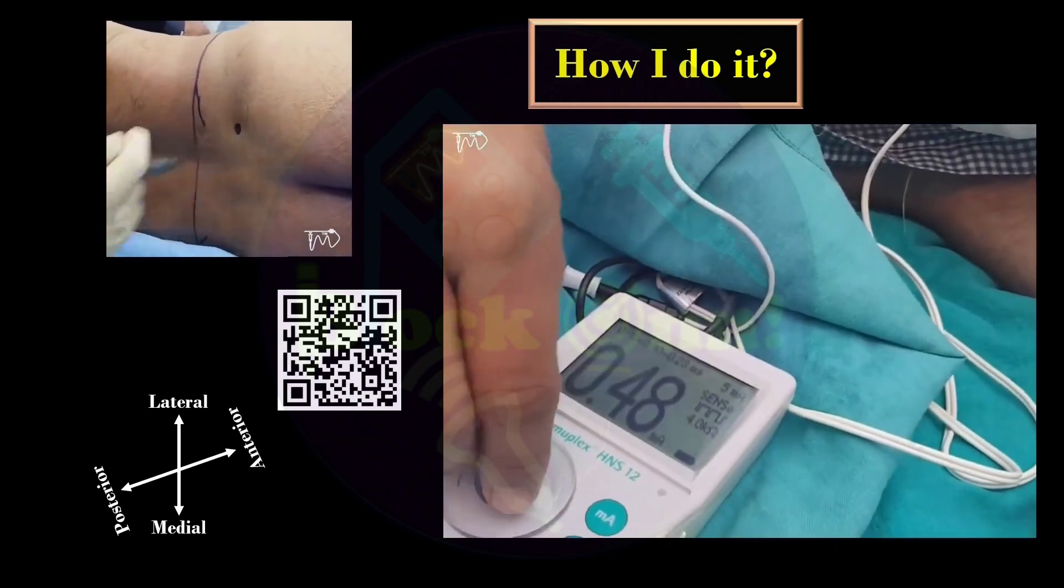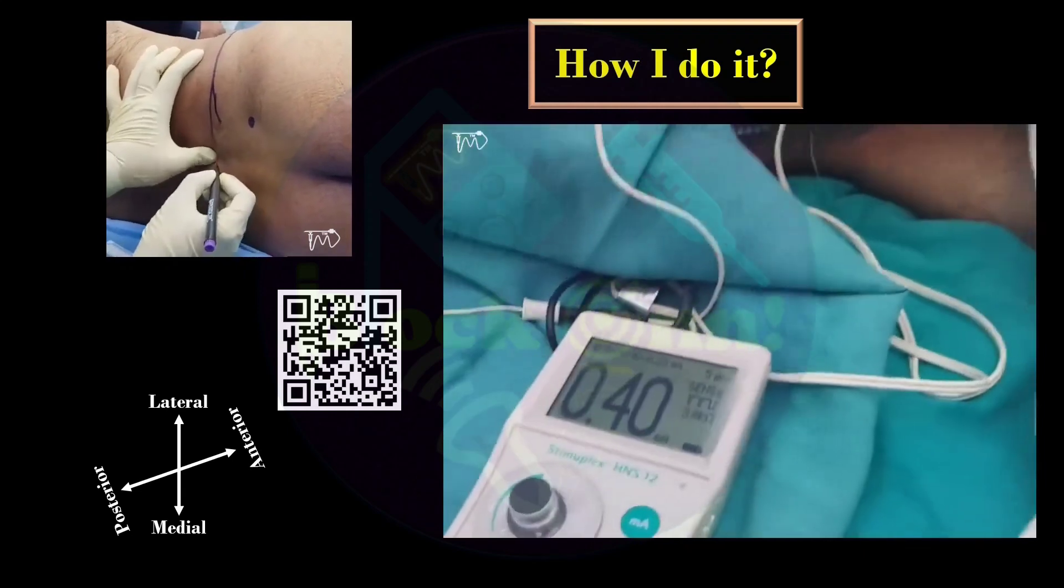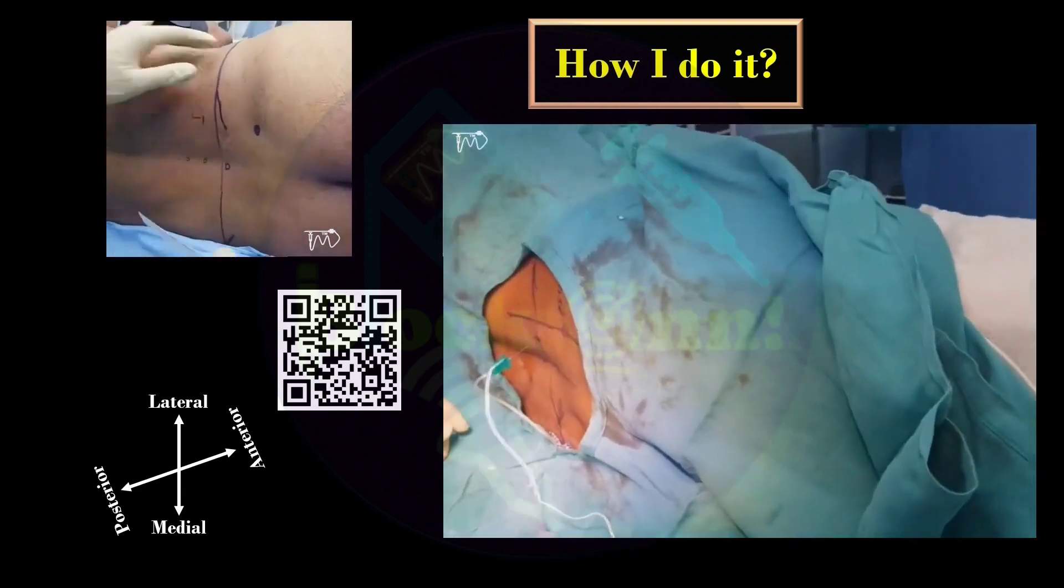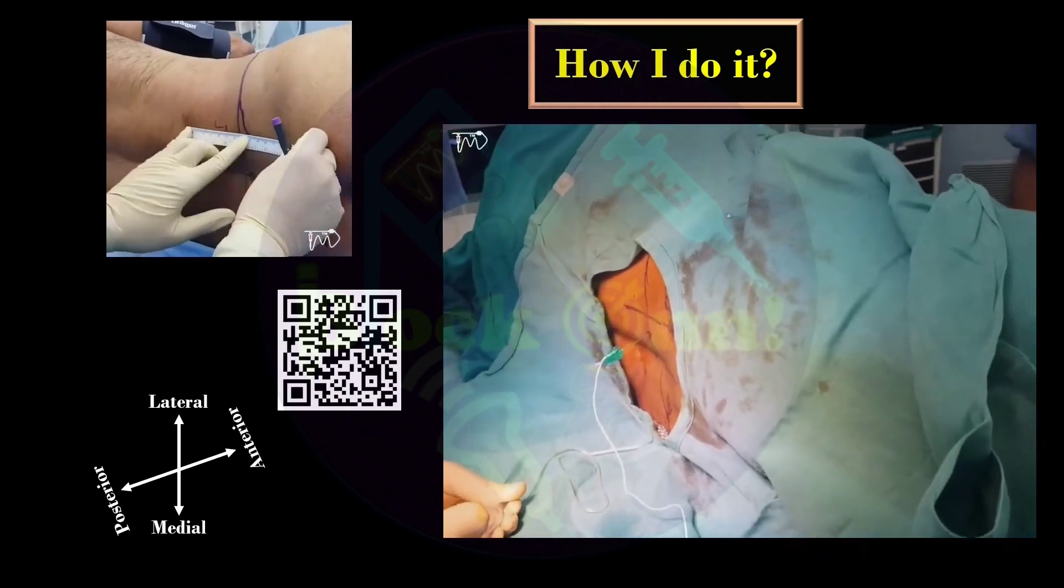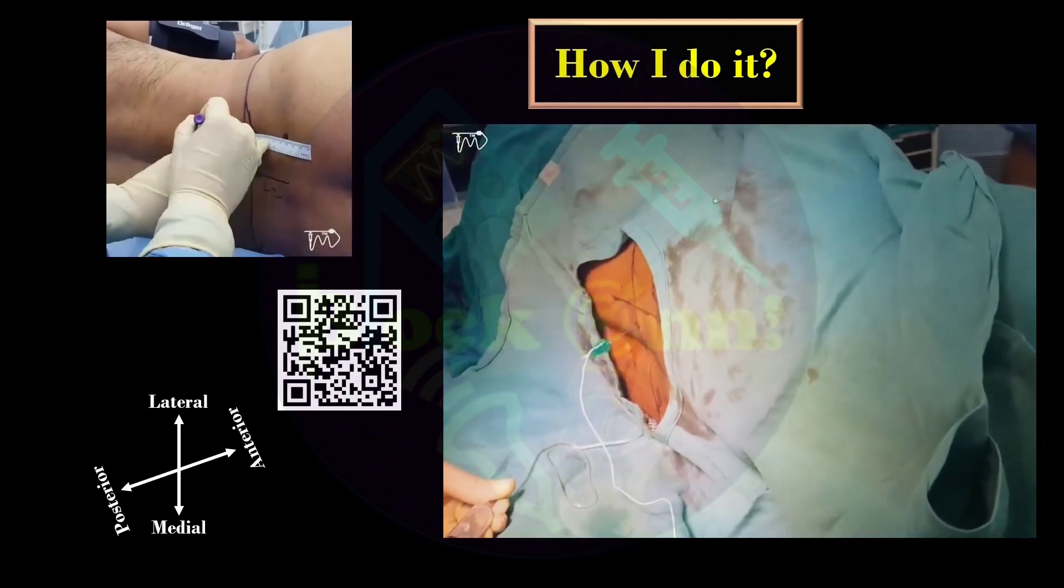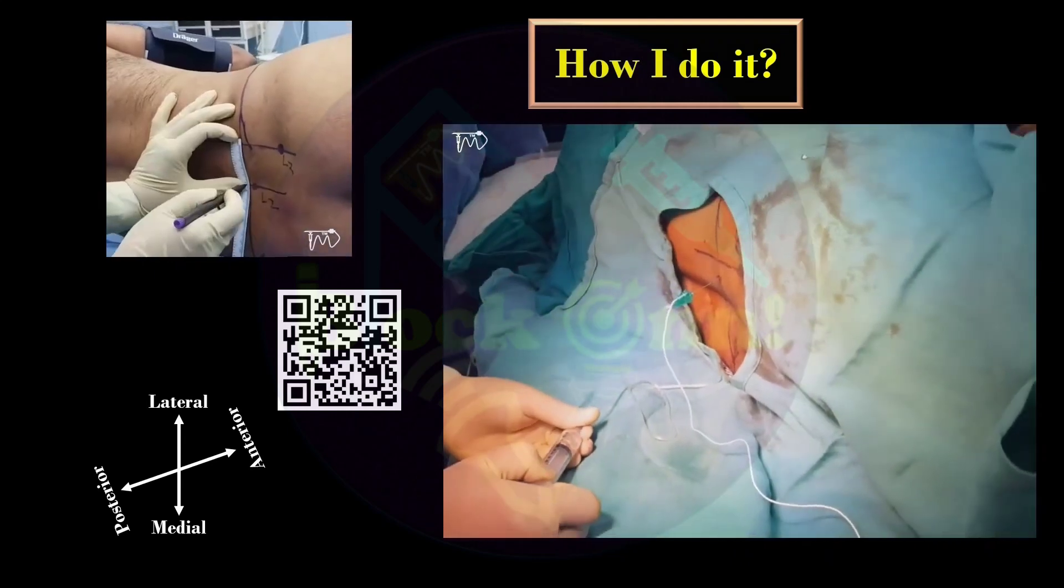You should not get any response beyond 0.4, because if you are getting response below 0.4, that is 0.2 or 0.1, that means you are very close to the dural sleeves. Injection here would lead to total spinal or epidural anesthesia. Be careful about that.